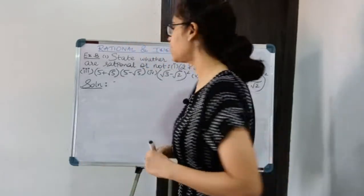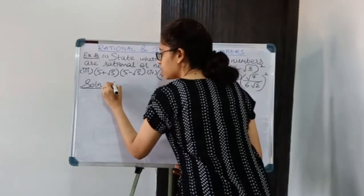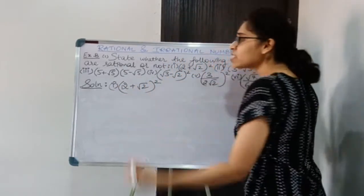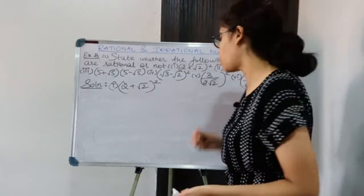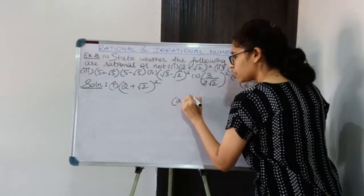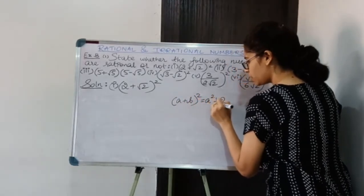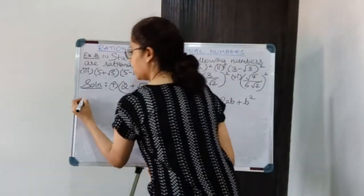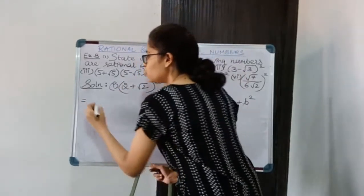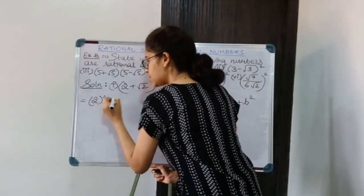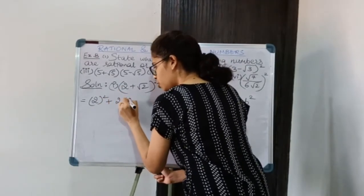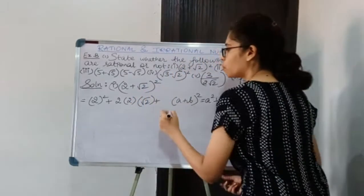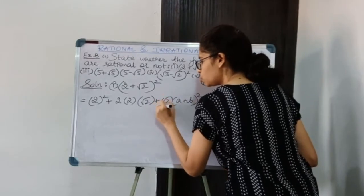Let's begin with the first identity: (2 + √2)², which is of the form (a + b)². The expansion of (a + b)² gives a² + 2ab + b². Applying it here, a = 2 and b = √2, so we get 2² + 2 × 2 × √2 + (√2)².